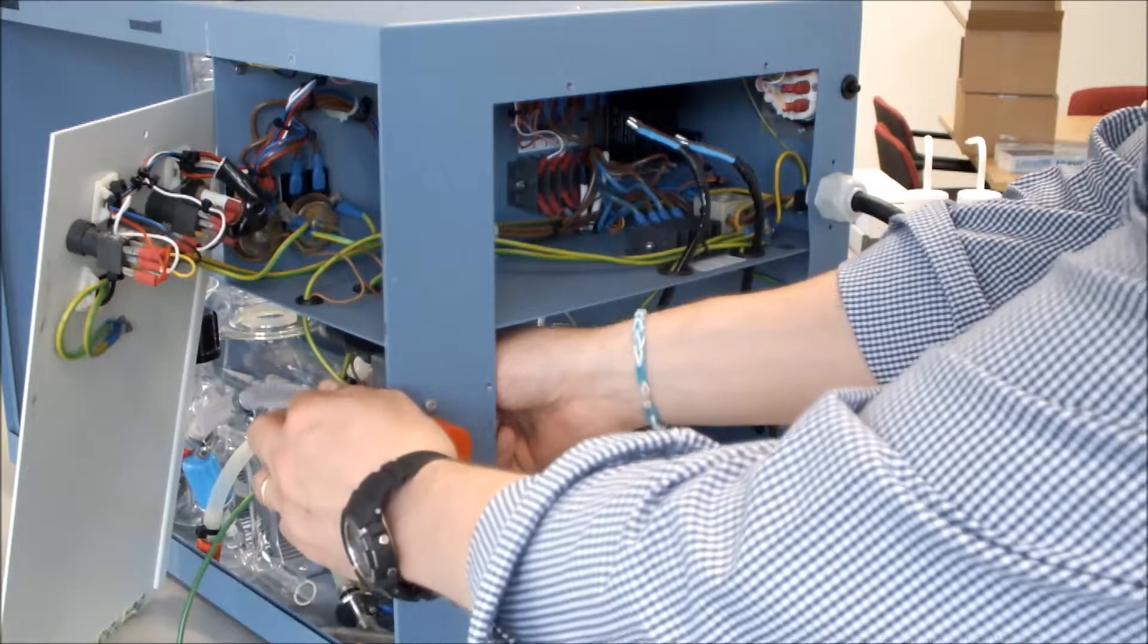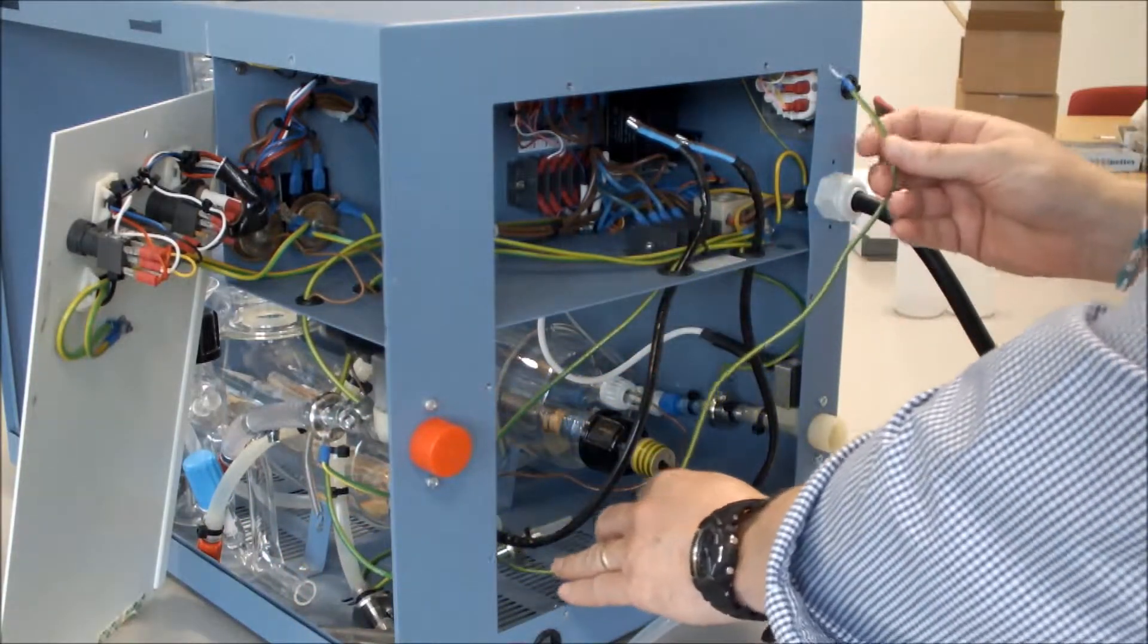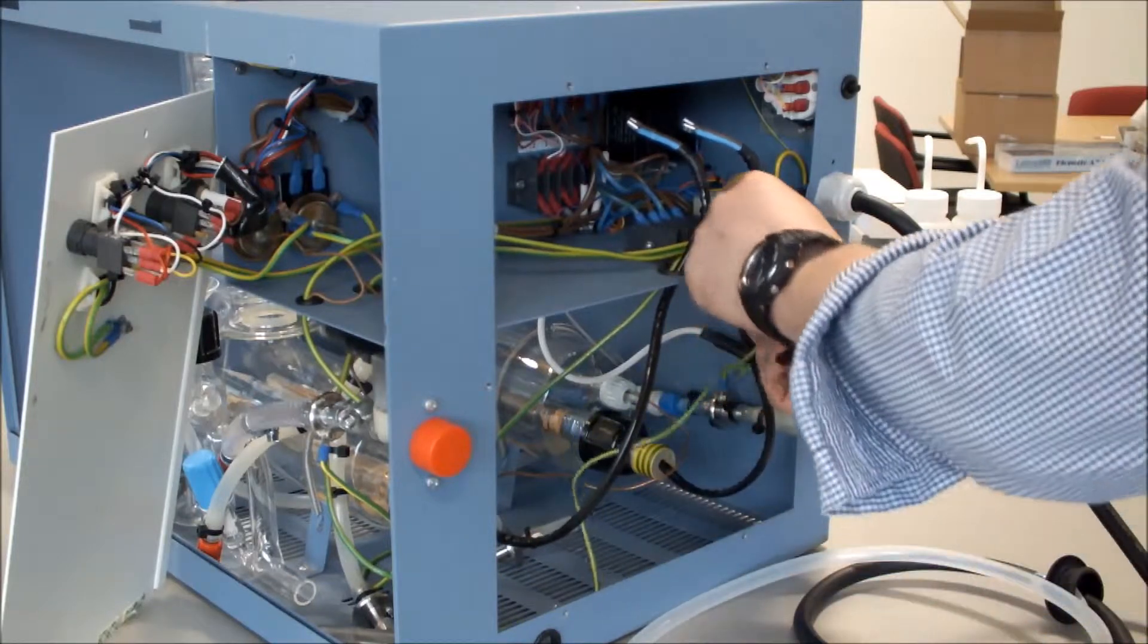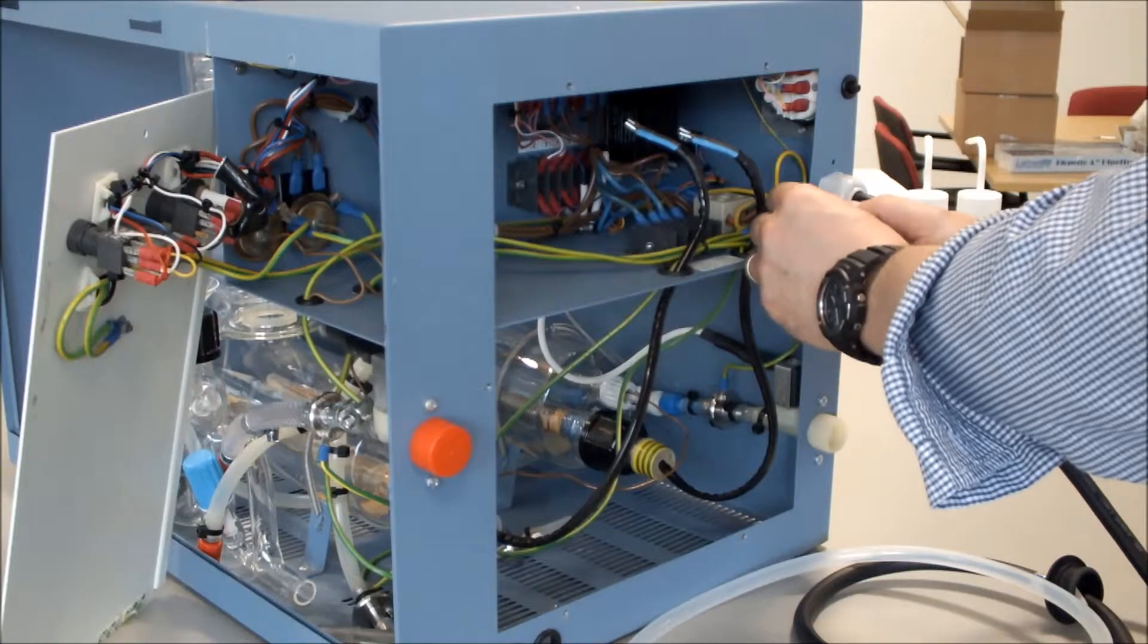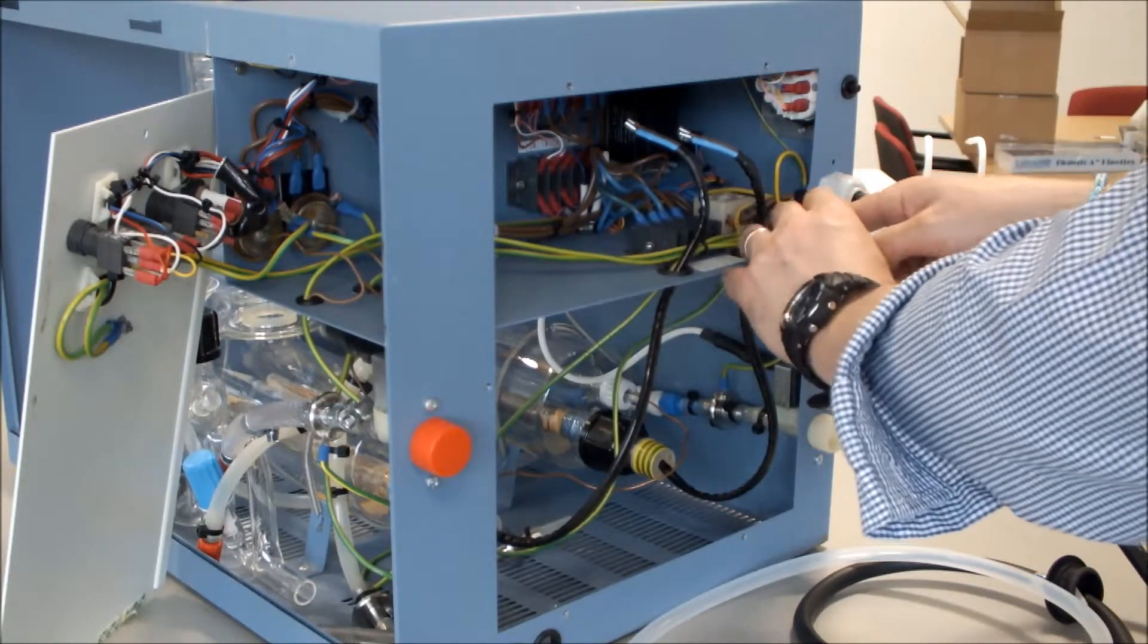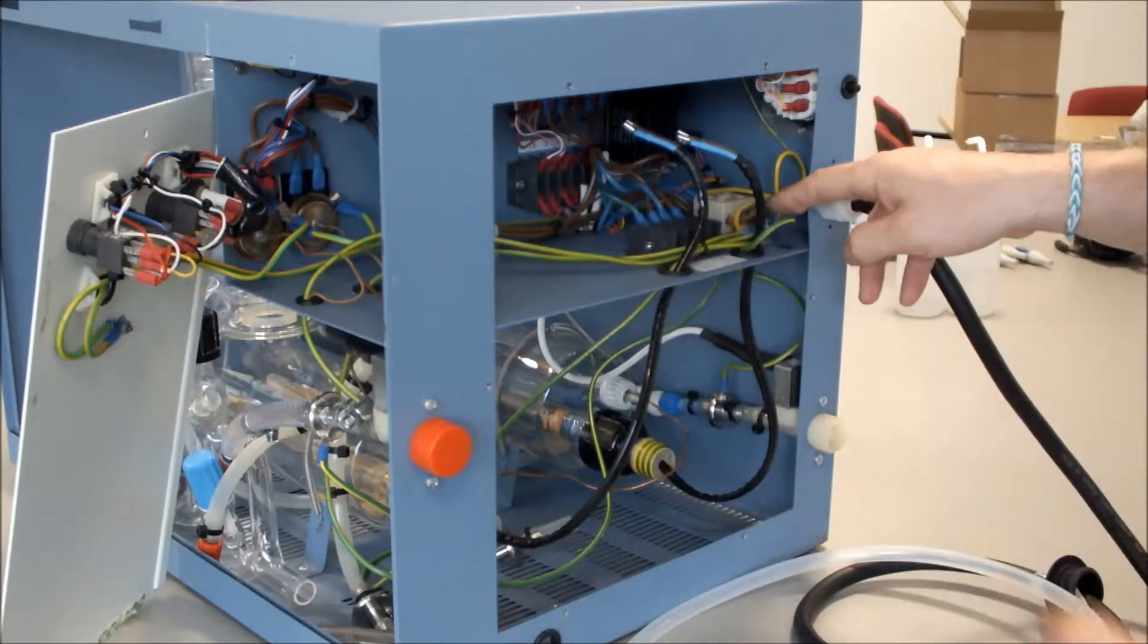From our deioniser pipe assembly, we then take our earth cable, feed it through the hole in the chassis, and connect it to the earth point. Undo the nut, fit the earth cable, put the nut back on, and tighten it up.